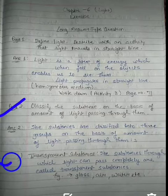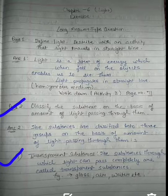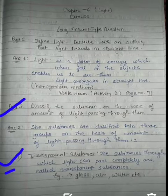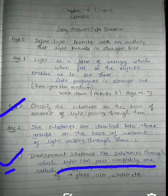The very first is transparent substance. The second is translucent substance. And the third is opaque substance. So students, transparent substances are the substances through which light can pass completely.